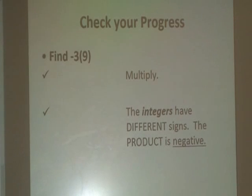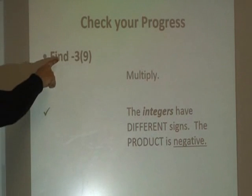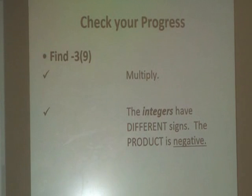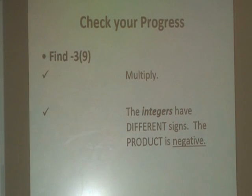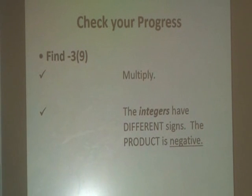Let's have you check your progress. Can you find negative 3 times 9? The integers do in fact have different signs. Did you come up with negative 27? You're correct.